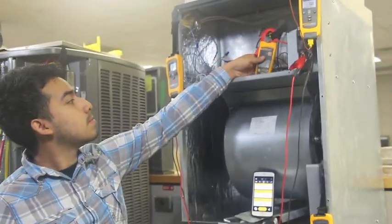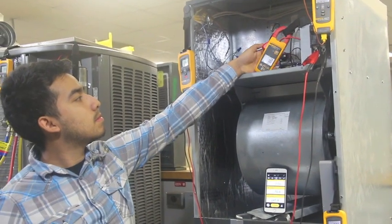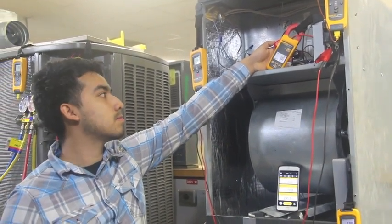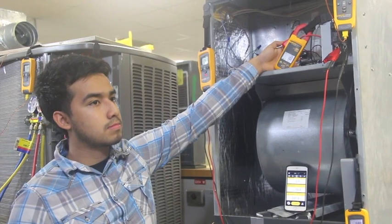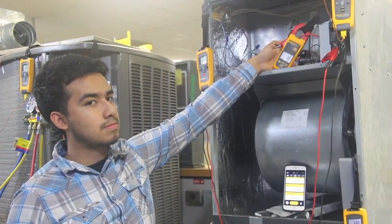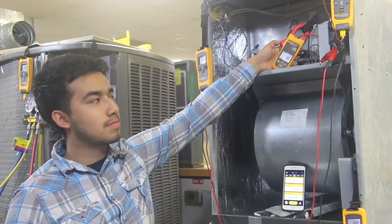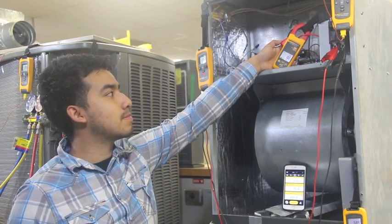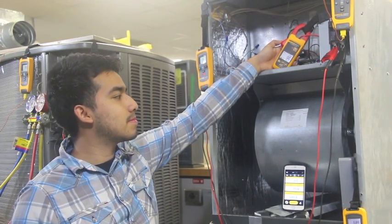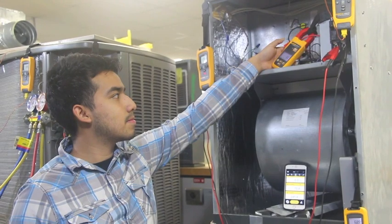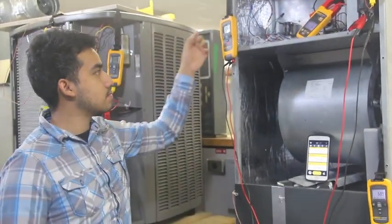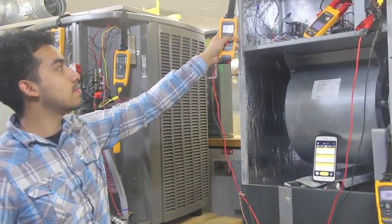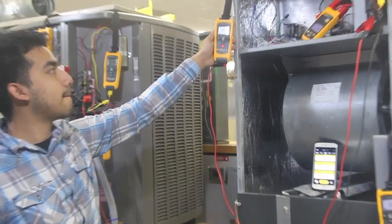Our next meter is an amp meter which measures current across the blower motor, and then we have a voltage meter showing the voltage to the unit.